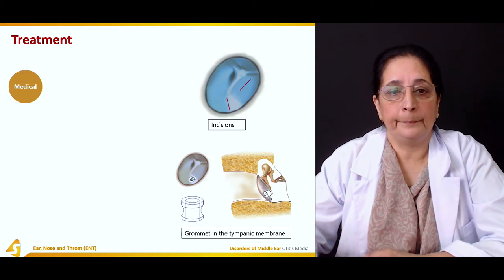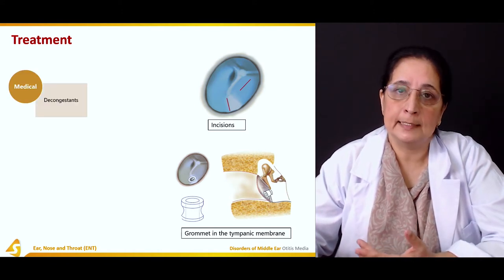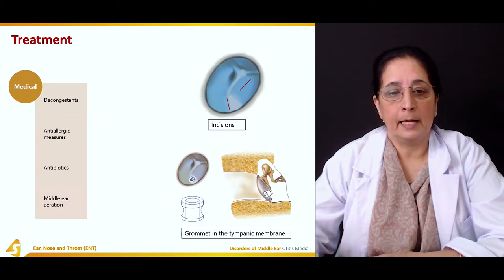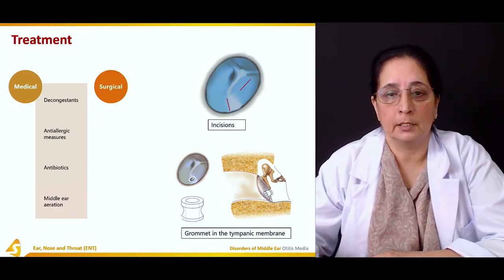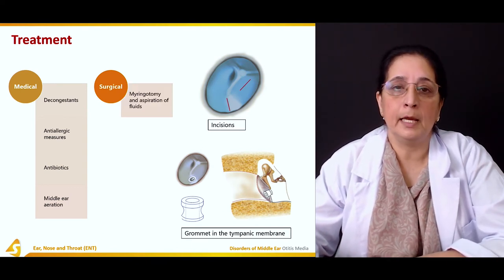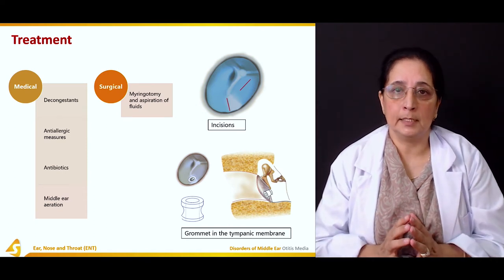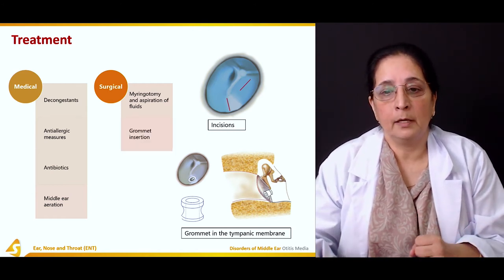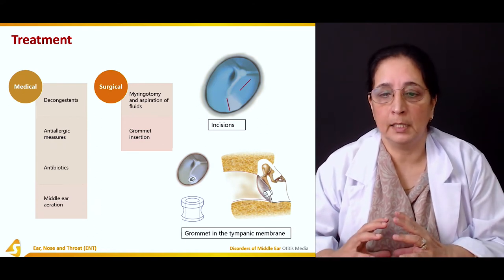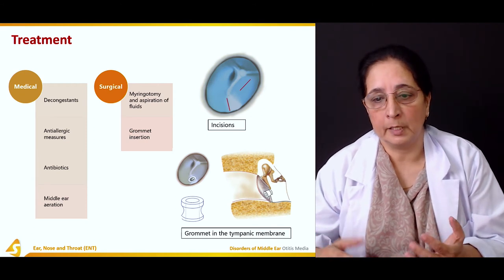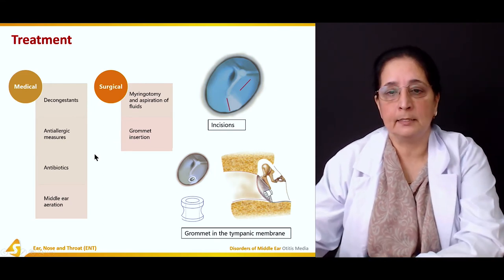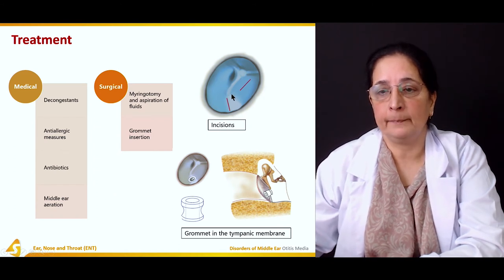Medical treatment includes decongestants, anti-allergic measures, and antibiotics. Middle ear aeration is also attempted. Surgical treatment includes myringotomy and aspiration of fluid — myringotomy is an important procedure to drain the fluid. Grommet insertion is also performed, where a grommet is placed in the tympanic membrane to allow drainage, and an incision in the tympanic membrane can also drain the fluid.